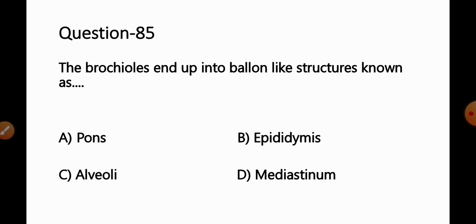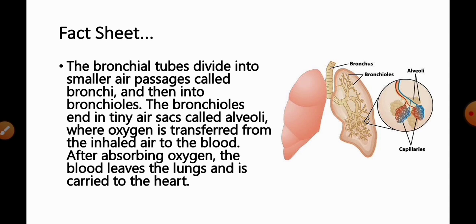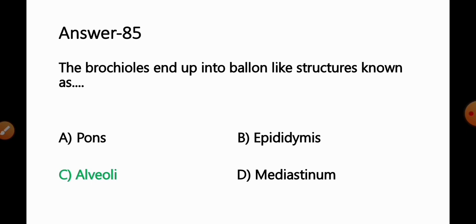Question No. 85: The bronchioles end up into a balloon-like structure called — Option A: Pons; B: Epididymis; C: Alveolus; D: Mediastinum. The bronchioles divide and terminate into alveoli, which are the air sac or balloon-like structures responsible for gas exchange in the lungs. So Option C — alveoli — is the correct answer.